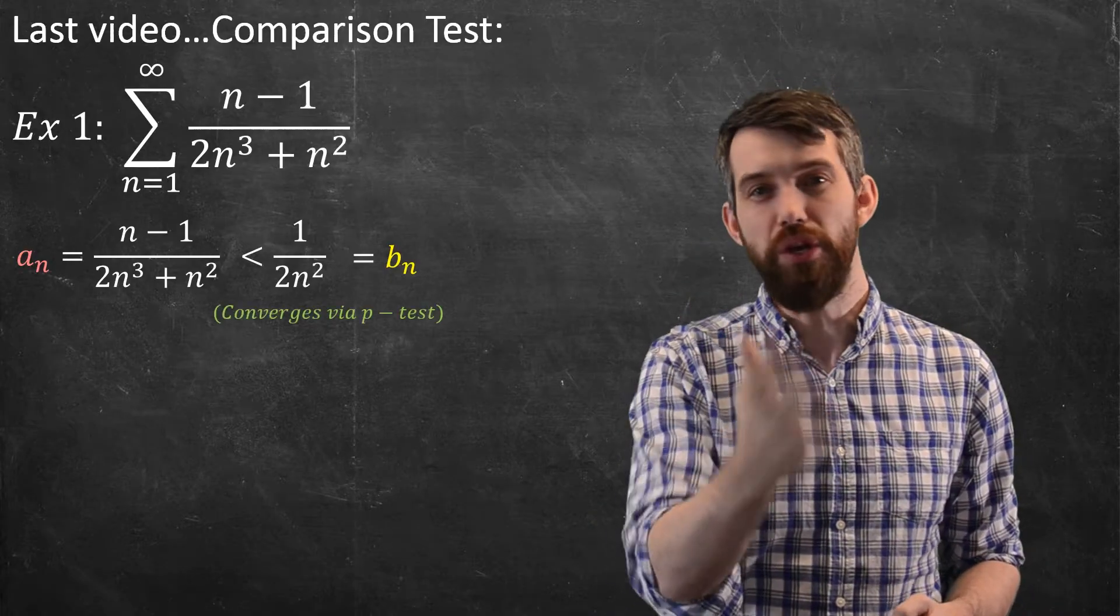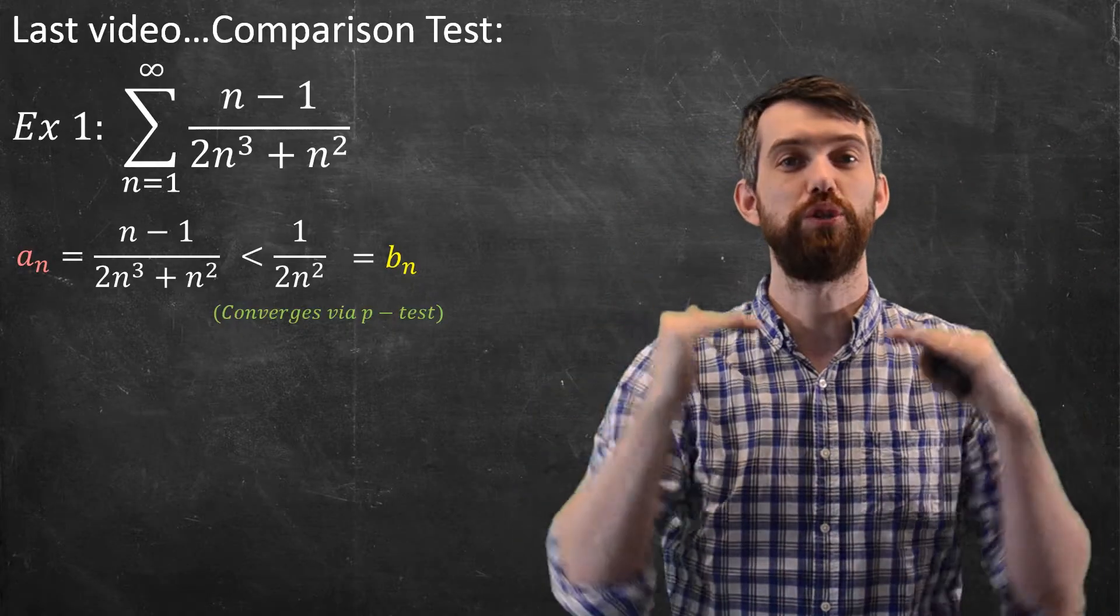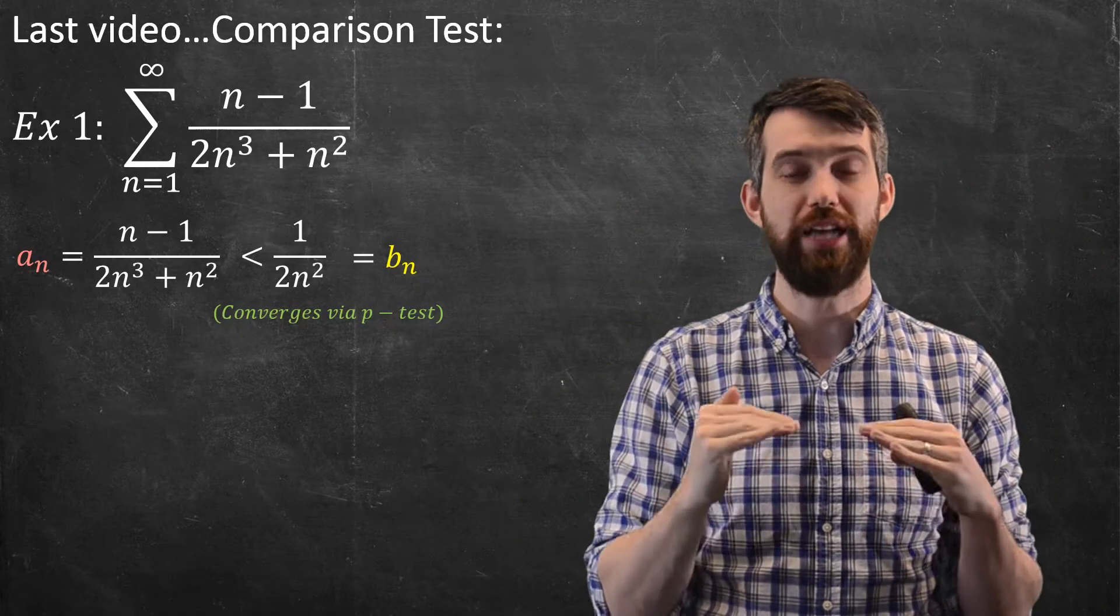In this example we compared it to a b_n that was just going to be 1 over 2n squared. That was a series that we knew converged by the p-test, and because the bigger one converged, the b_n converges, the smaller one, the a_n converges as well.